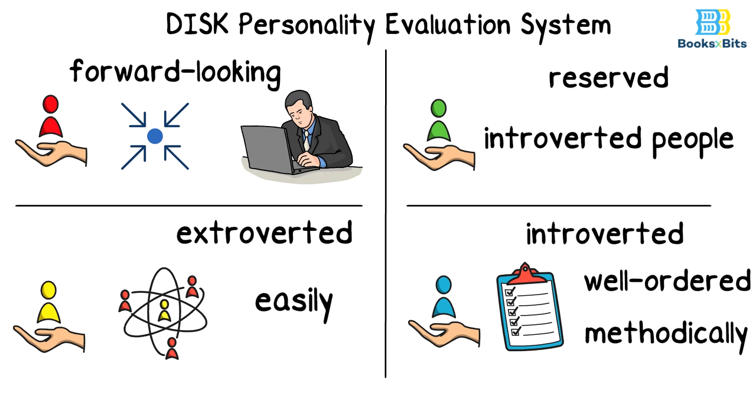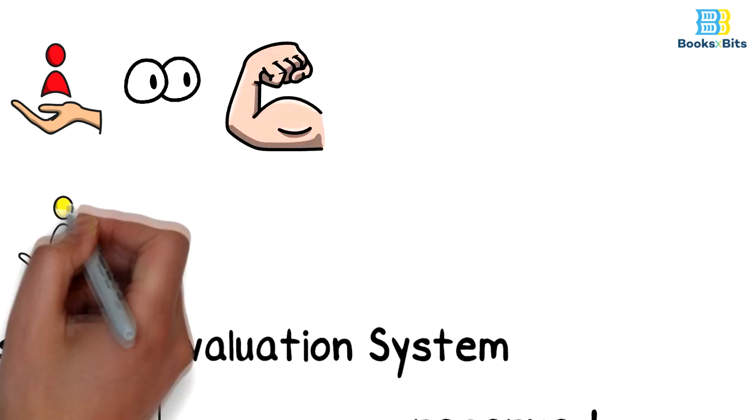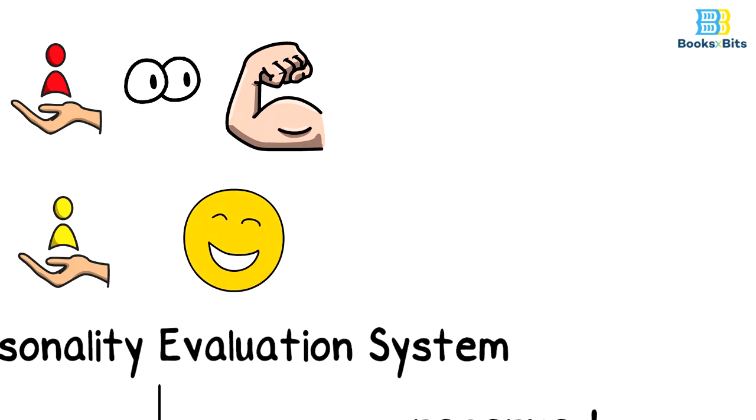But to understand these behavioral patterns well, we also need a deeper explanation. The easiest way to identify the red color is to look into his eyes, and you will see persistence and determination in them. As for the yellow color, you will know him by his smile, and this indicates that he is a heavily social being.